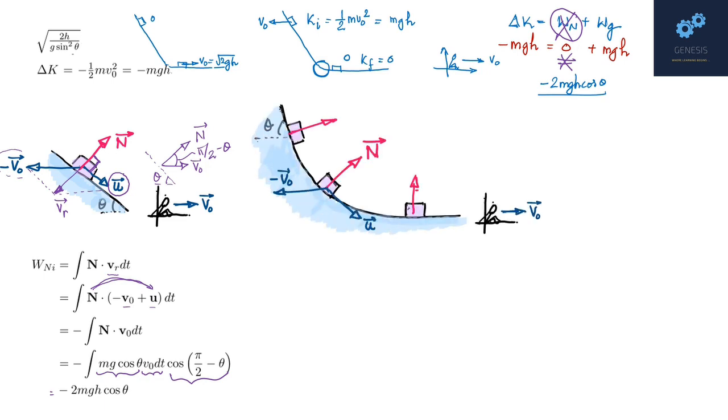This shows the situation as the block goes from the incline part to the flat part of the track. You can see the direction of N vector is changing. Although N vector and u vector will always be perpendicular, the angle between N vector and minus v0 vector is going to change as it passes through this curved part.